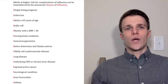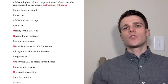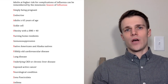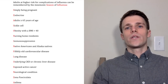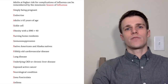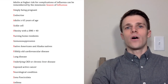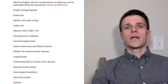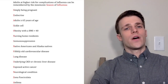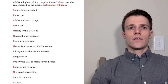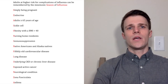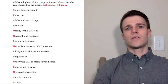The S stands for simply being pregnant - the risk of complications increases during each trimester and even up to two weeks after childbirth. E stands for endocrine, such as a poorly controlled diabetic. A stands for adults greater than or equal to 65 years of age. S stands for sickle cell. O stands for obesity with a BMI greater than 40. N stands for nursing home residents. The I stands for immunosuppression, such as HIV patients, especially those with CD4 counts less than 200.